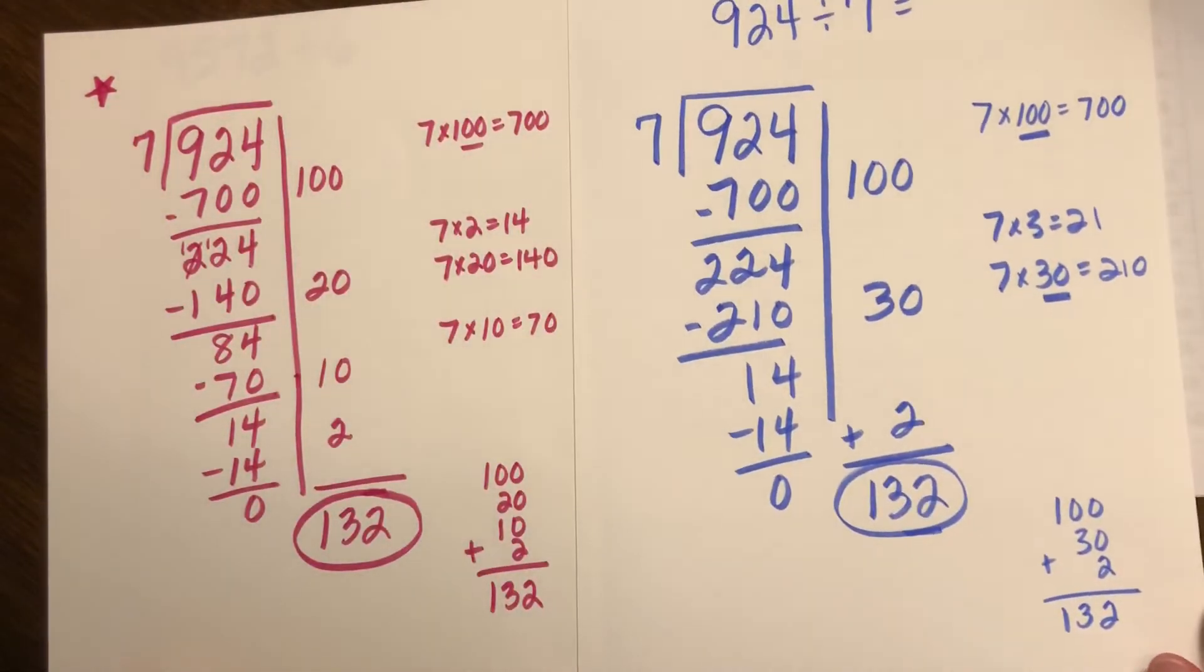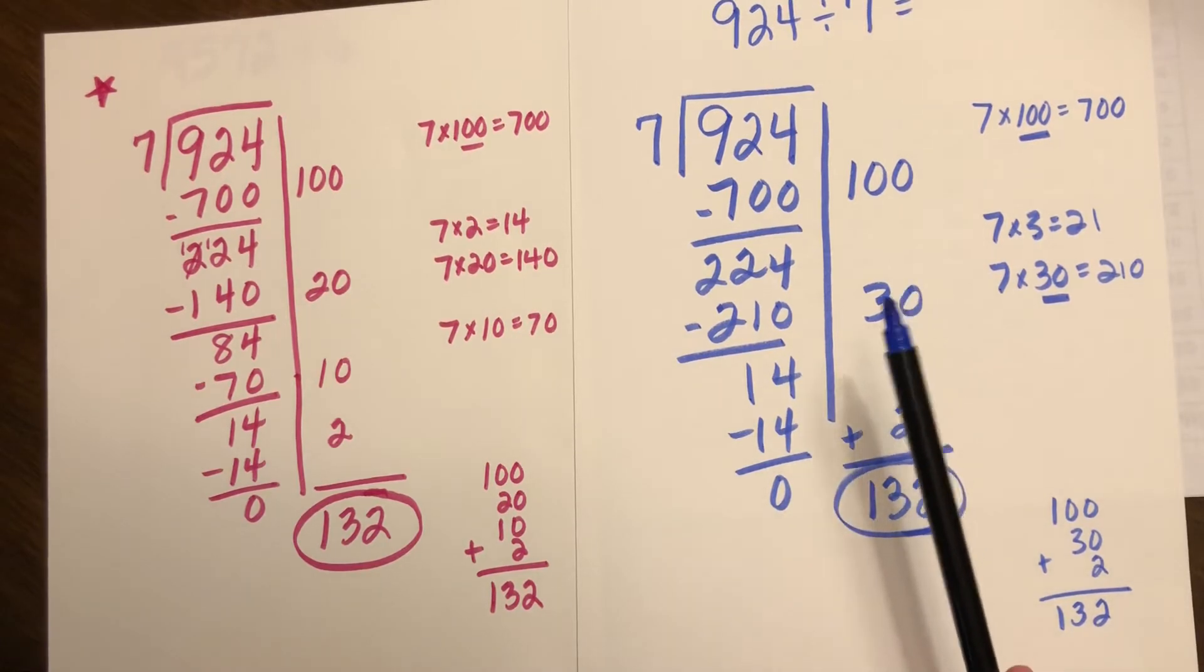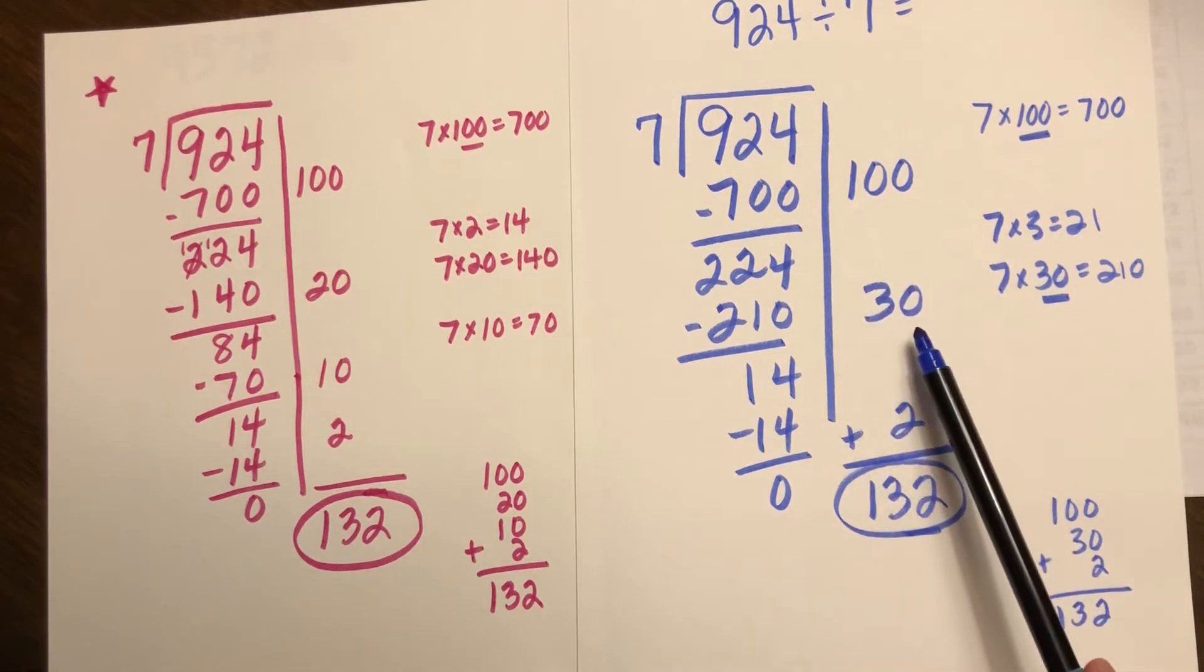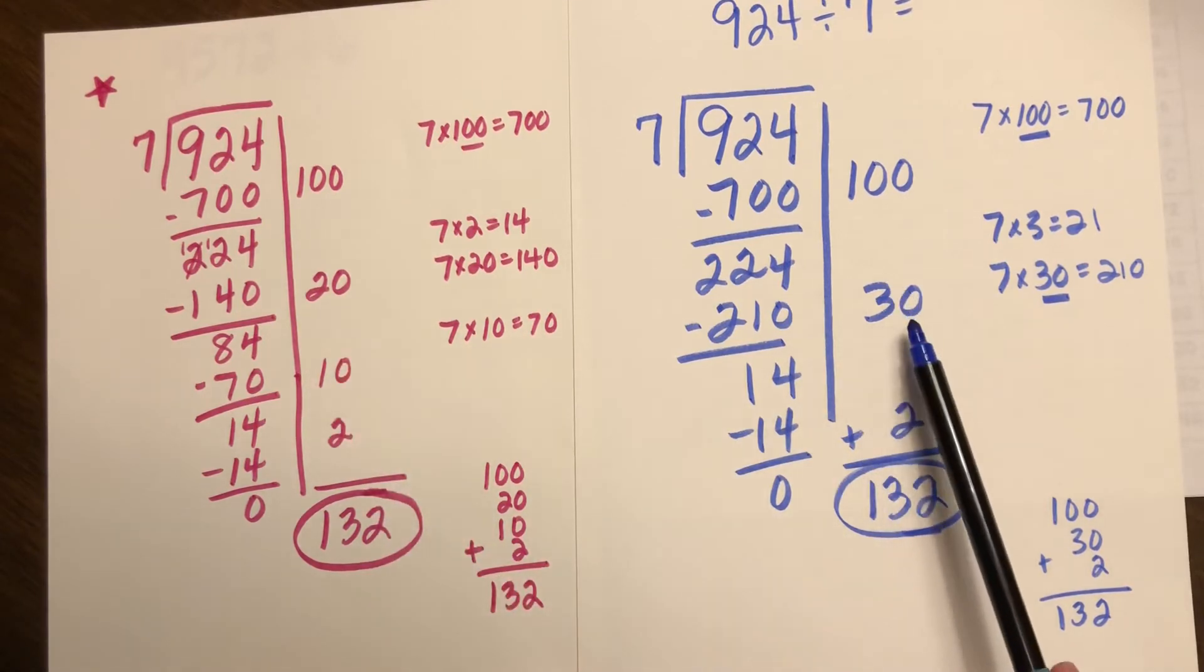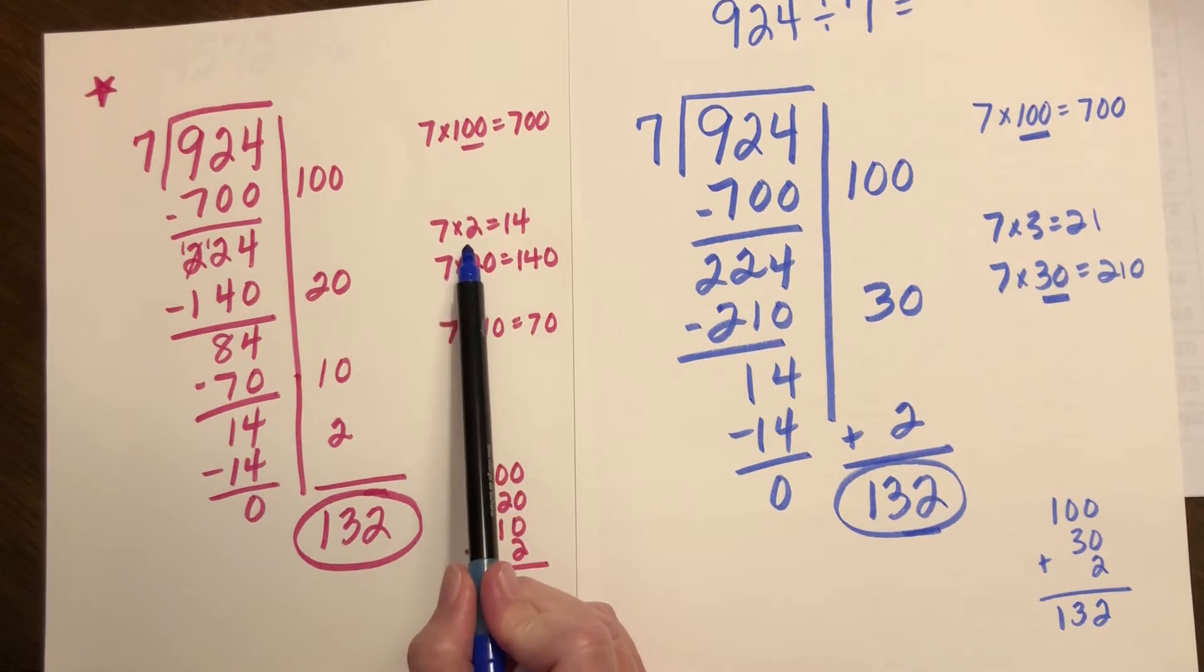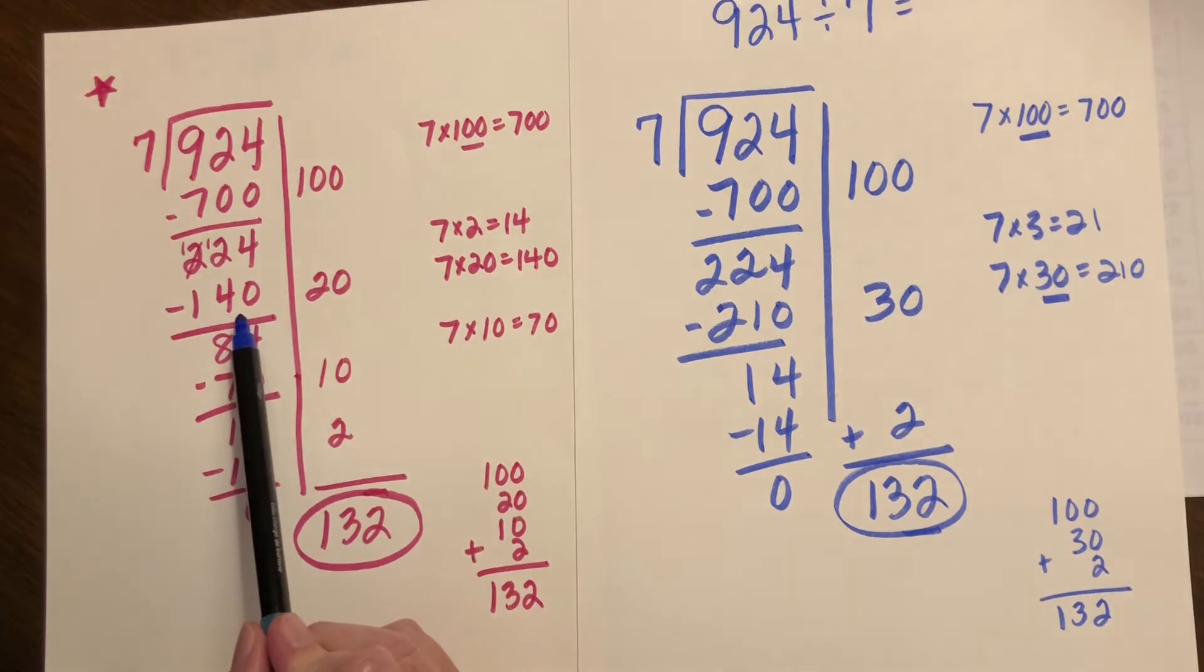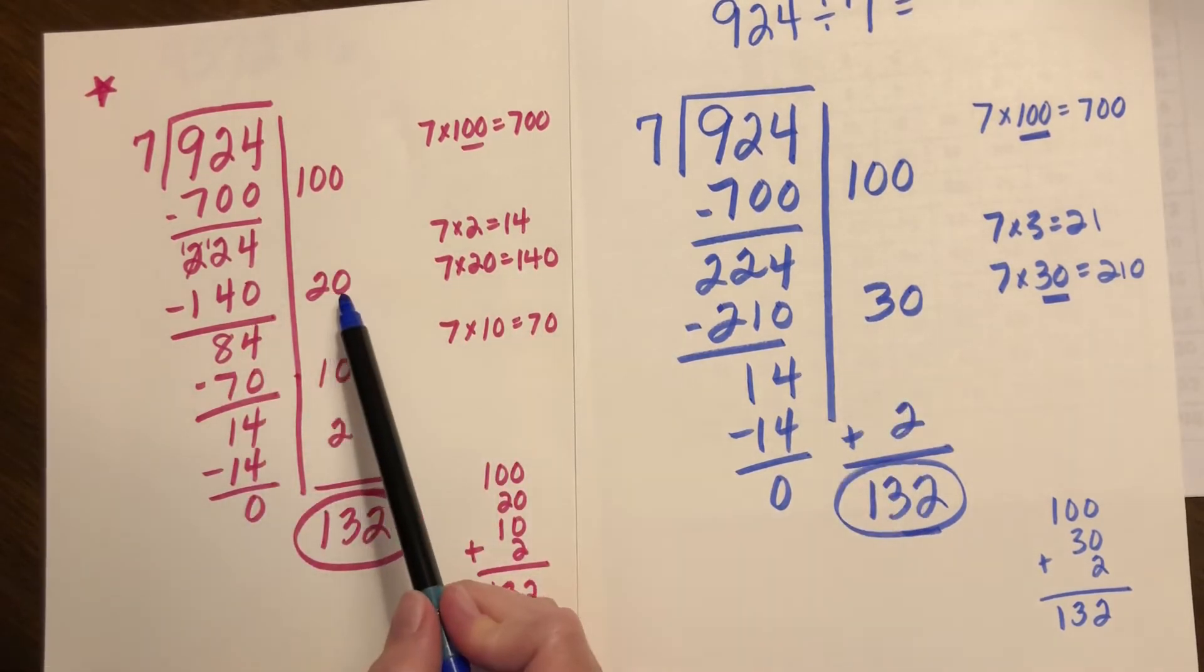I want you to recognize that when we talk about friendly numbers, friendly numbers are what are friendly to you as the mathematician. So here I used a hundred and then I decided to use 30, but in this example perhaps I didn't remember seven times three and I wanted to use seven times two instead and went to seven times 20 which gave me 140. So instead of using 30 I broke it up into two parts of 20 and then 10.